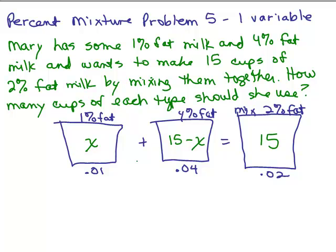Now if you know how to do systems of equations with 2 variables, this problem could also be done with 2 variables and I'll be doing that on another video. But this is how you would do it if you only had to solve equations with 1 variable. So notice the amount in each vat here, I've got x cups plus 15 minus x cups and that does actually equal 15.